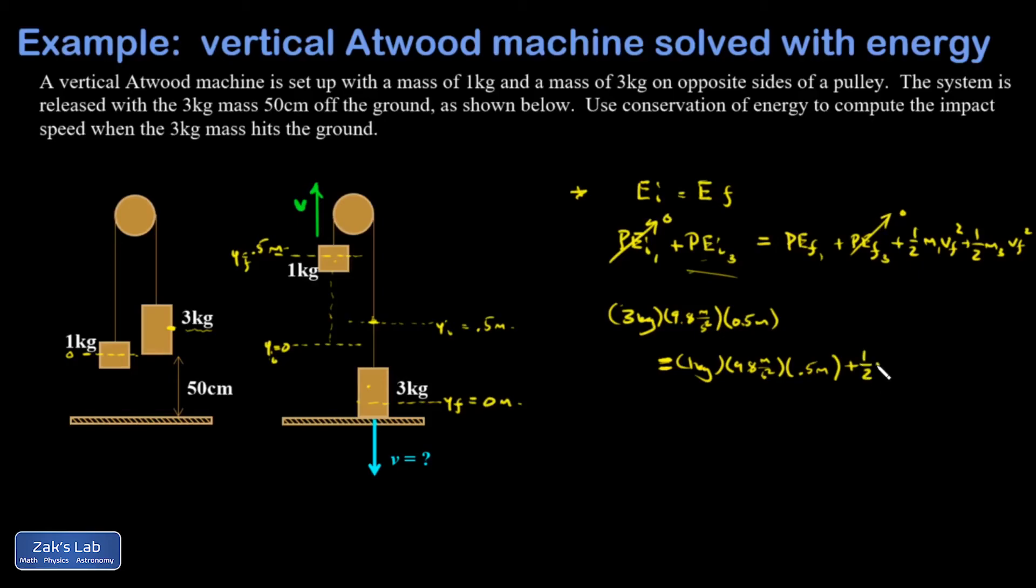And then I can factor some stuff out of this. I have a one half V final squared. They share the same final velocity times M1 plus M3. So one kilogram plus three kilograms. All right, I'll go ahead and just start smashing numbers together. So three times 9.8 times 0.5. I'm going to subtract from that the numbers in this term. So 9.8 times 0.5.